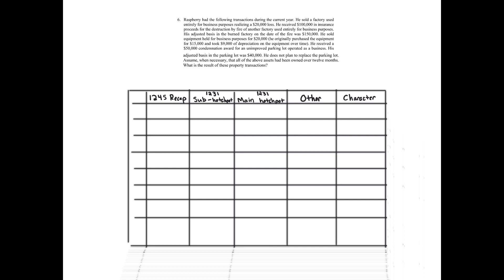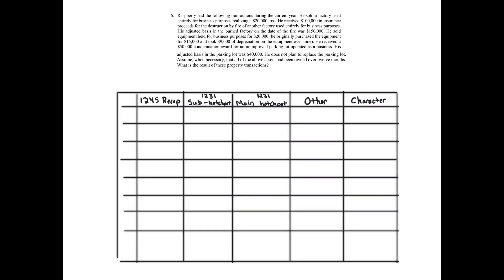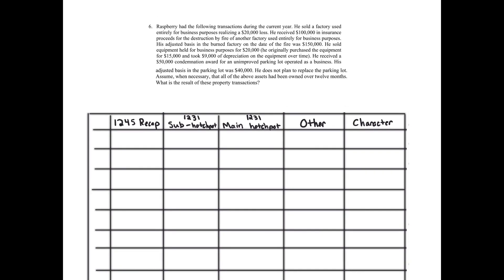This one is just a bunch of transactions, all during the tax year. Let's label the transactions first, because that way we can label these on the actual chart as we go. So the first transaction is going to be the sale of the factory.